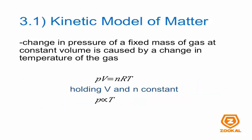A change in pressure of a fixed mass of gas at constant volume is caused by a change in temperature. If you hold n constant because it's a fixed mass, R is already a constant, and V is constant, you get P is proportional to T. So the change in pressure is affected by the temperature of a gas when the mass and volume are fixed. Now you see the importance of this equation — you can infer things from PV equals nRT.